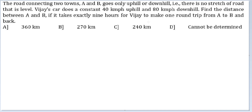Now, if he is making one round trip, all the portions that were previously uphill will now be downhill, and all the portions that were previously downhill will now be uphill. So the average speed for the entire journey can be calculated using the harmonic mean of these two speeds.